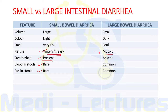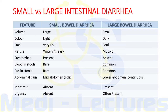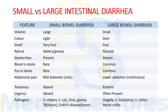In large bowel diarrhea, the nature is mucoid, steatorrhea is absent, and blood and pus in stools are very common. Abdominal pain is mid-abdominal and colicky in small bowel diarrhea, and lower abdominal continuous pain in large bowel diarrhea. Tenesmus and urgency are absent in small bowel but present in large bowel. Small bowel pathogens include Vibrio cholerae, E. coli, viral causes, Giardia, tuberculosis, and Crohn's disease. Large bowel pathogens include Shigella, Entamoeba histolytica, ulcerative colitis, and rectal colitis.